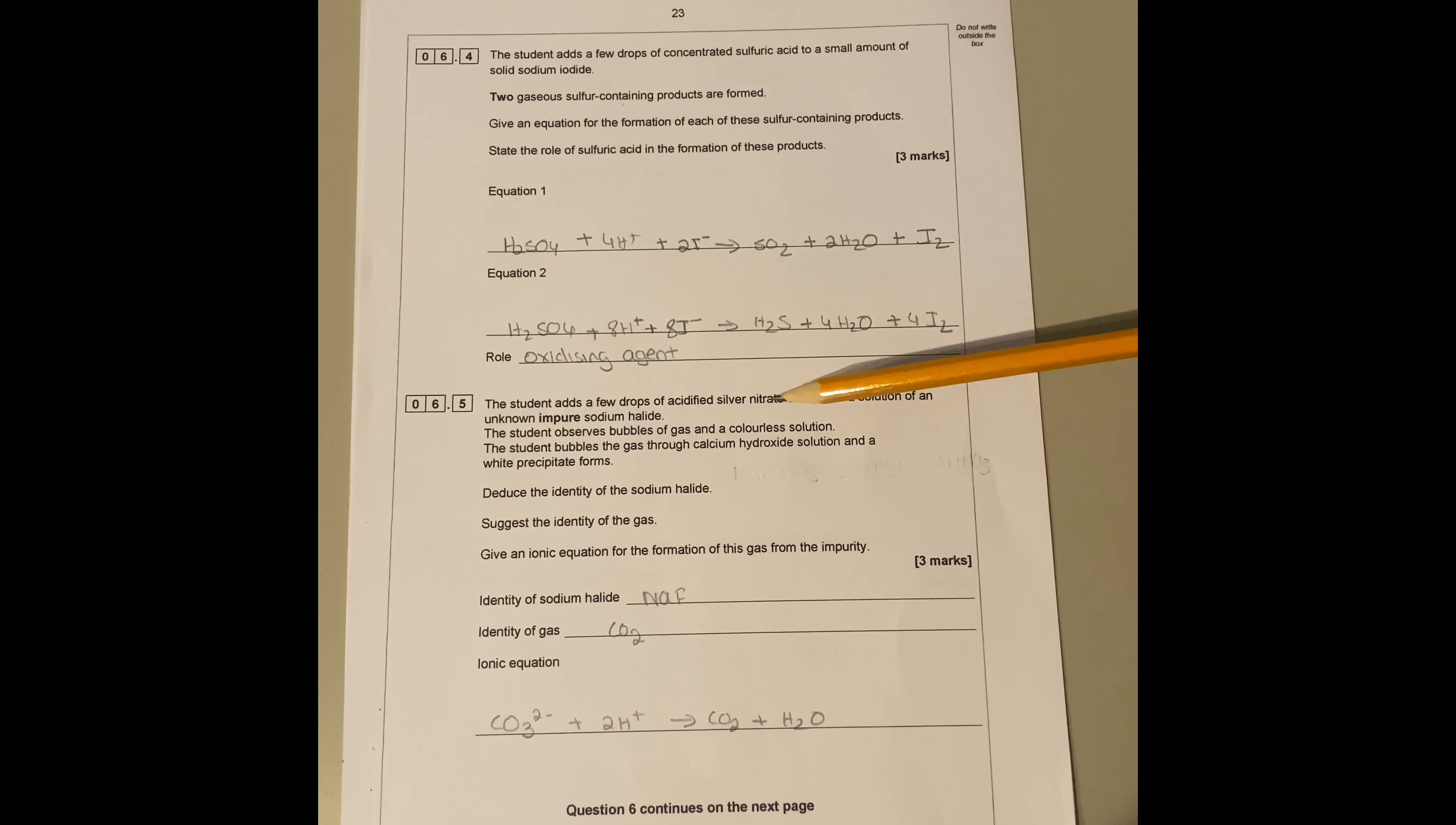Question 6.5: The student adds a few drops of acidified silver nitrate solution to a solution of an impure sodium halide. The student observes bubbles of gas and a colorless solution. The student bubbles the gas through a calcium hydroxide solution and a milky precipitate forms. That means there's a presence of CO2 there. Just identify the sodium halide, it's going to be sodium fluoride because it forms a colorless solution with the silver nitrate. The gas has to be CO2 because it forms a white precipitate when you bubble gas through the calcium hydroxide.